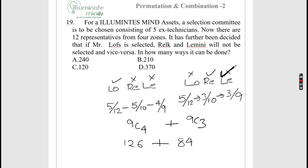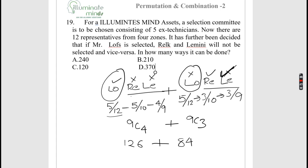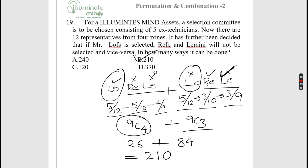A committee of 5 from 12 representatives: if Mr. Loft is selected, Rel-can-Lemony will not be, and vice versa. Case 1 — Loft selected: Lemony excluded, so pick 4 from remaining 9: 9C4 = 126. Case 2 — Loft not selected, Lemony selected: pick 3 from remaining 9: 9C3 = 84. Total = 126 + 84 = 210. Option B.